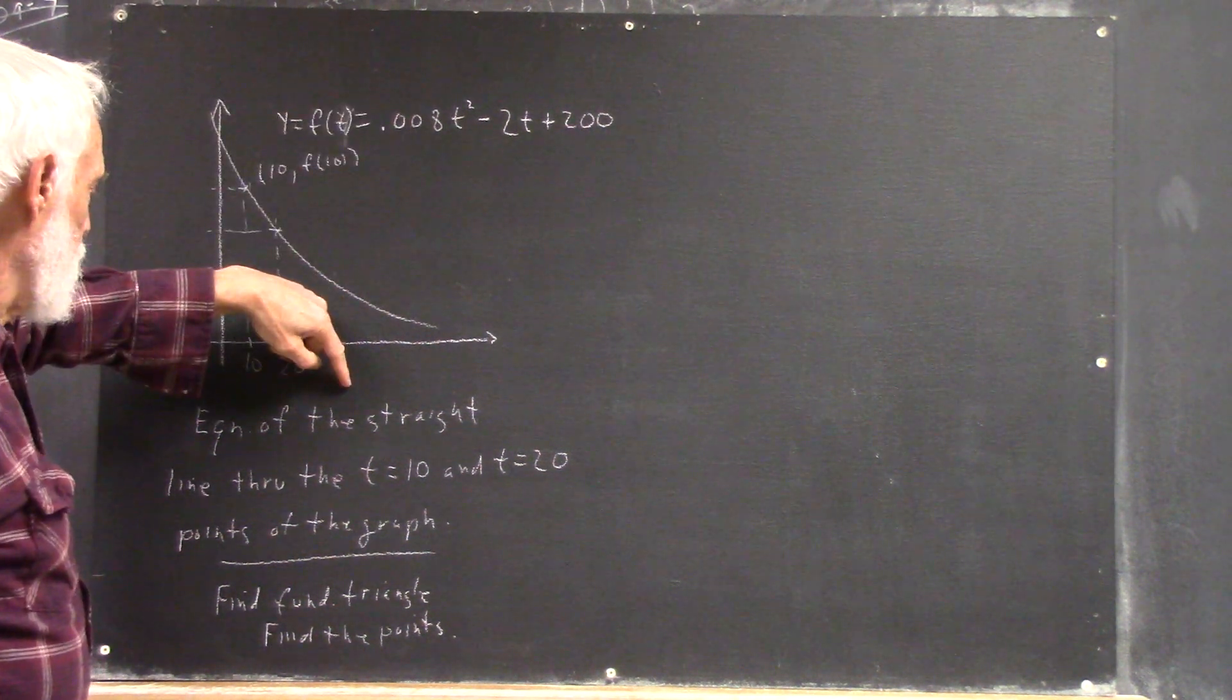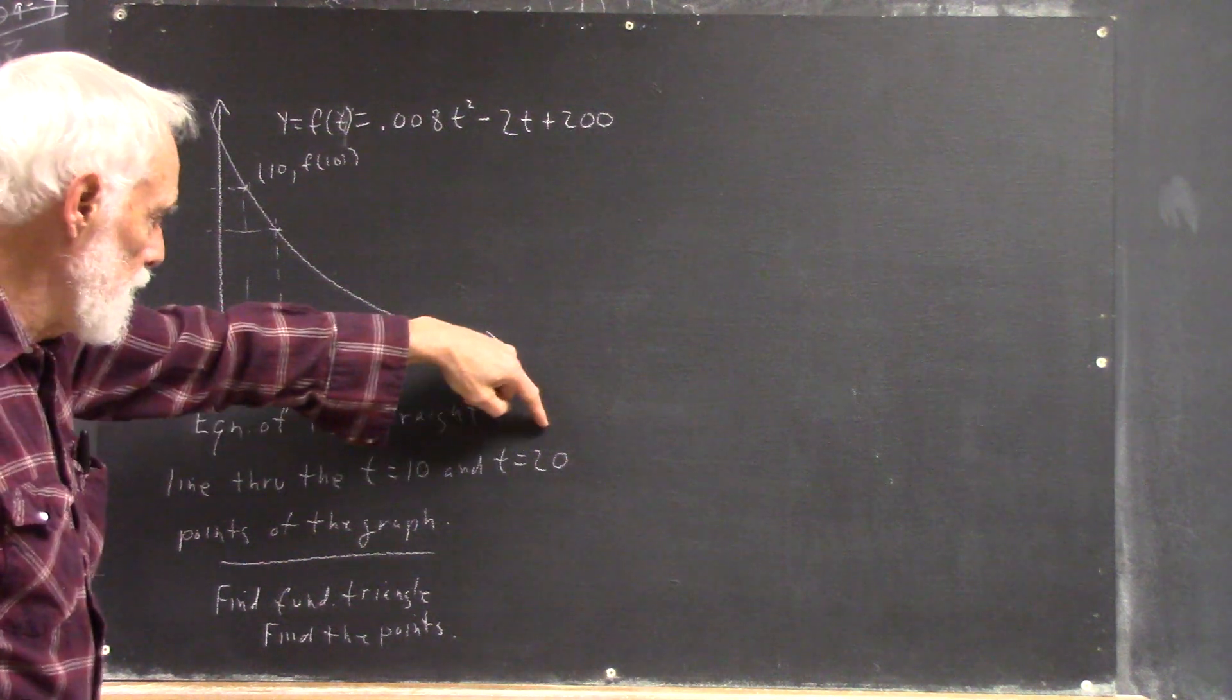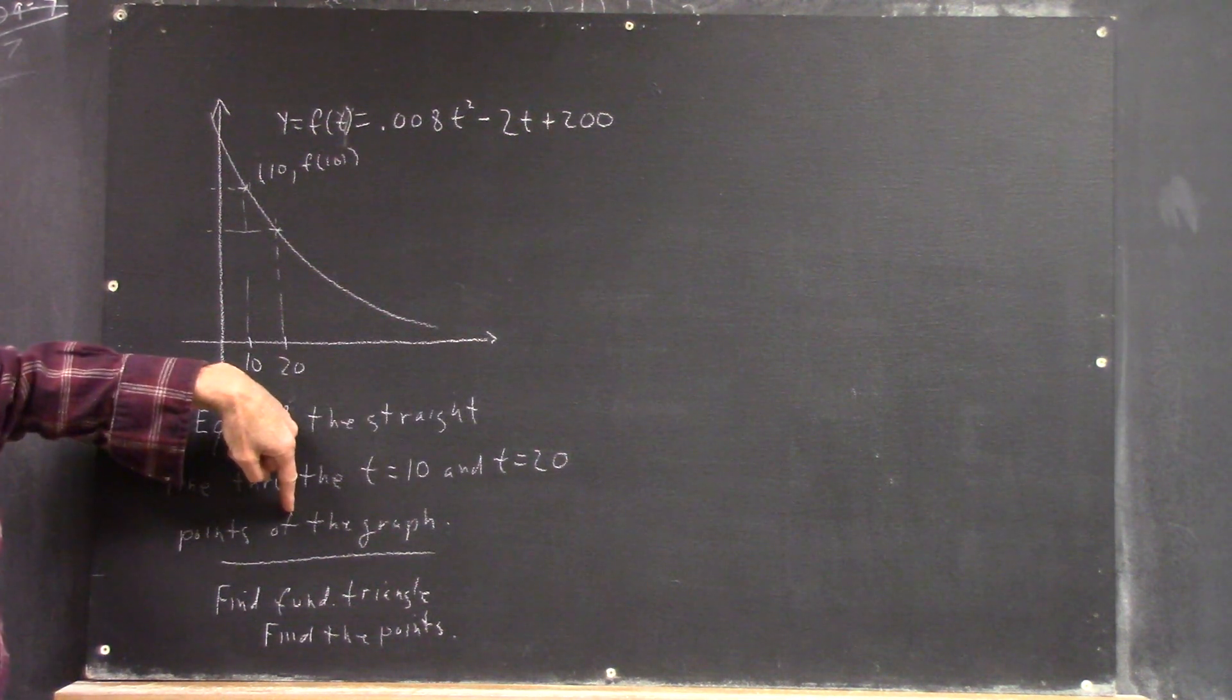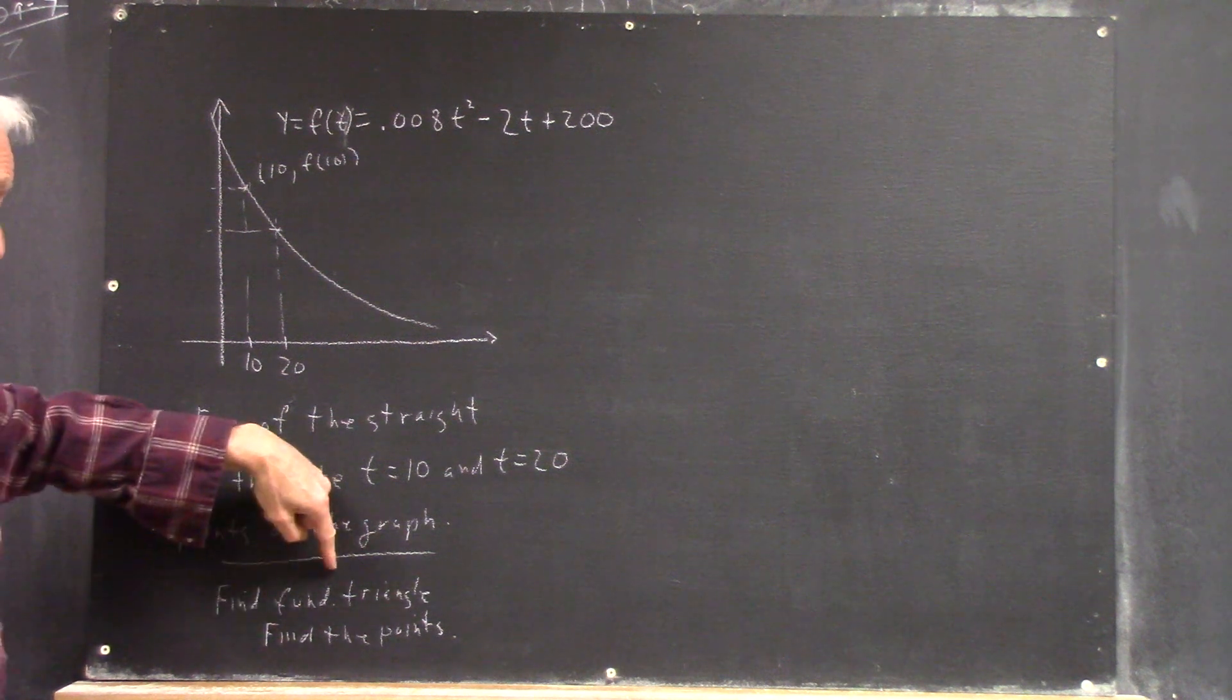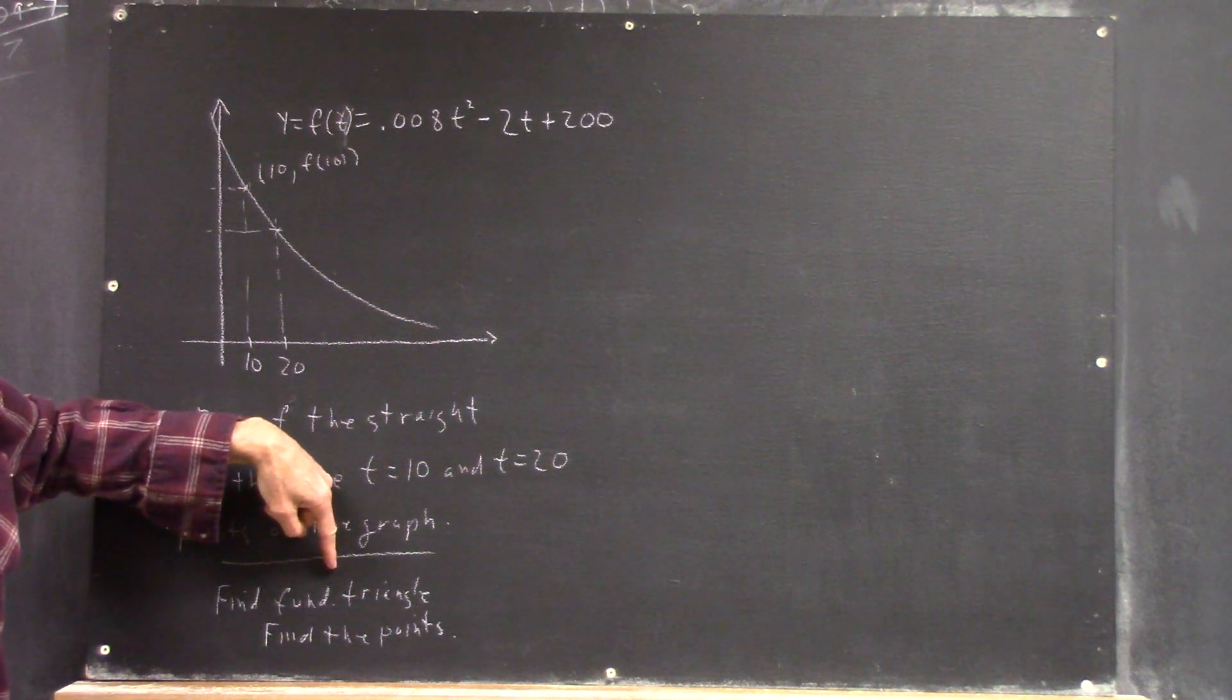We've got this function. We want the equation of the straight line through the t=10 and t=20 points of the graph. Now, it's been suggested to find the fundamental triangle. That's not a bad place to start.